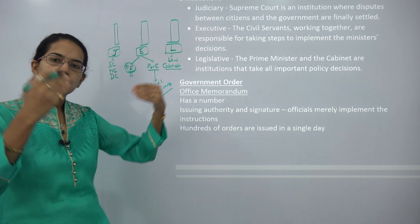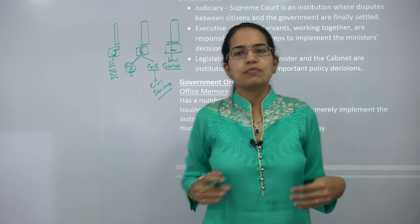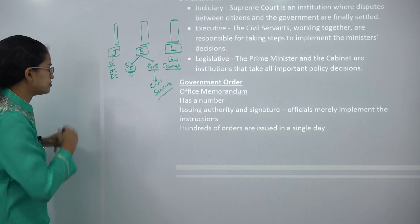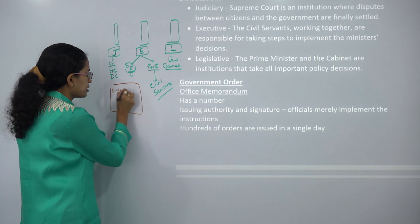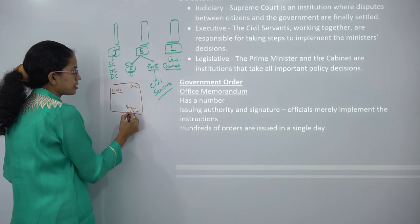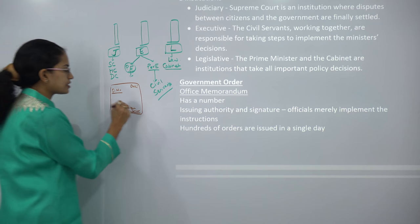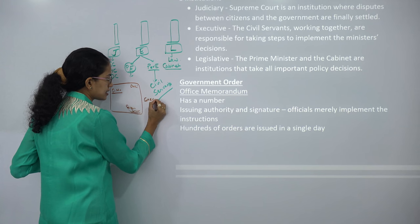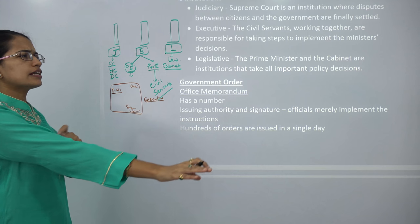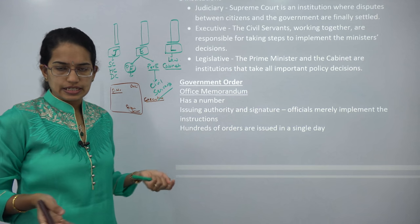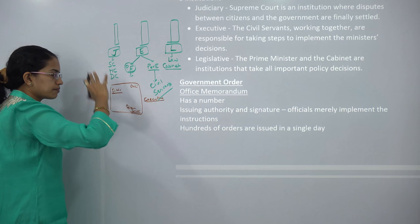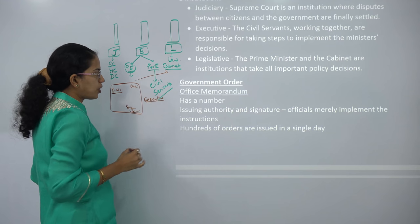Whenever a government order is passed, it contains an order number, a date, and the signature of a respective authority. The authority signing this letter is the executive, who communicates this order to various departments. In a single day, one to thousands of such orders can be released, each ranging from one page to numerous pages. These orders are made by the law-making bodies, or the legislature.